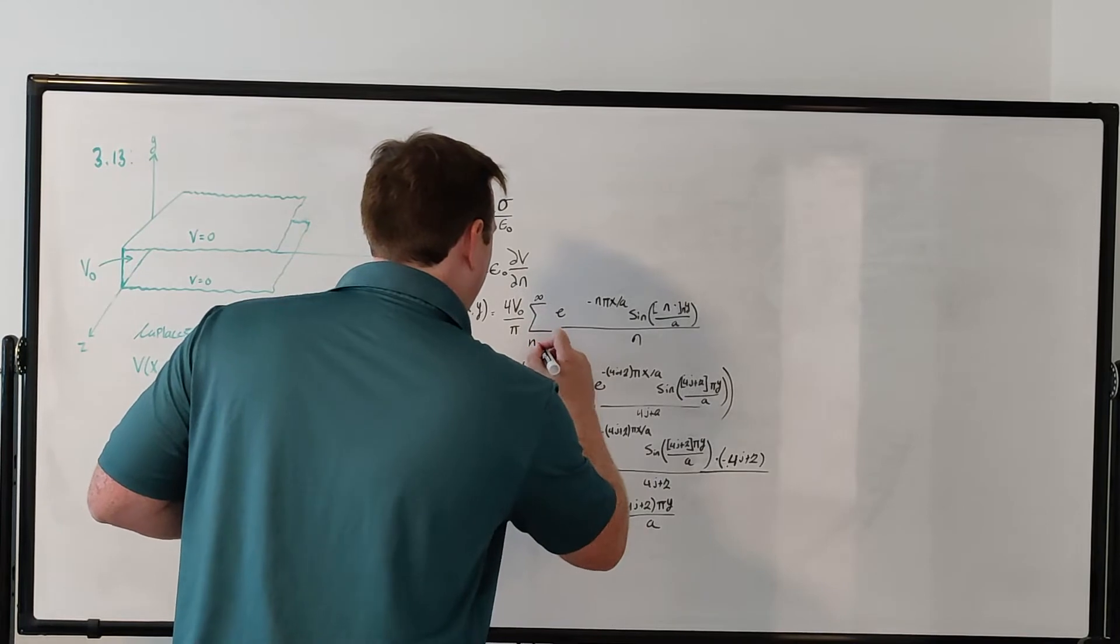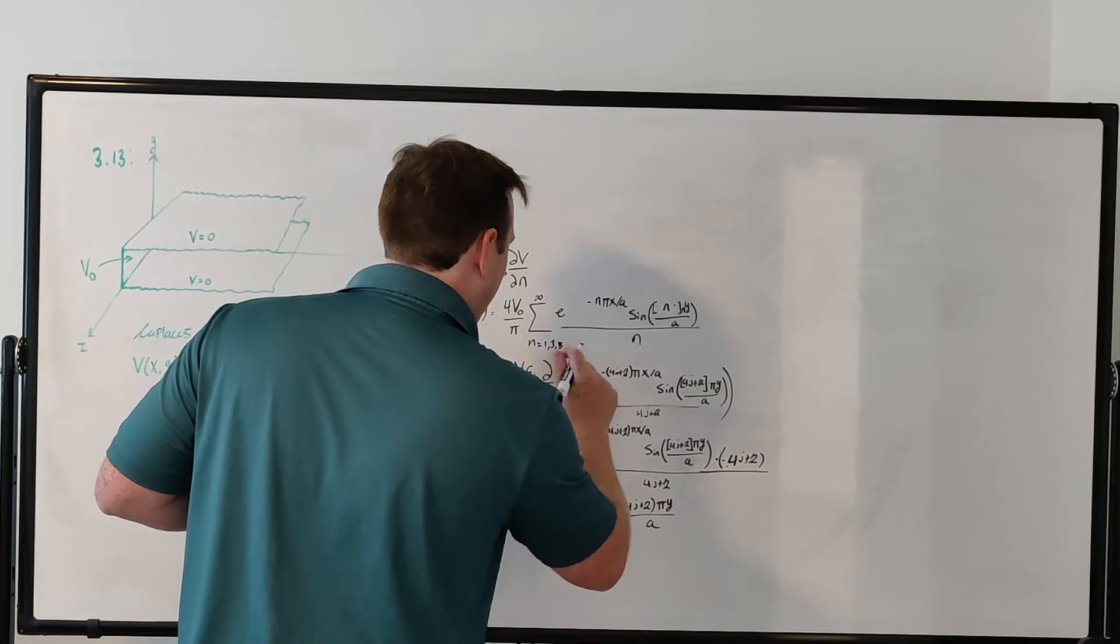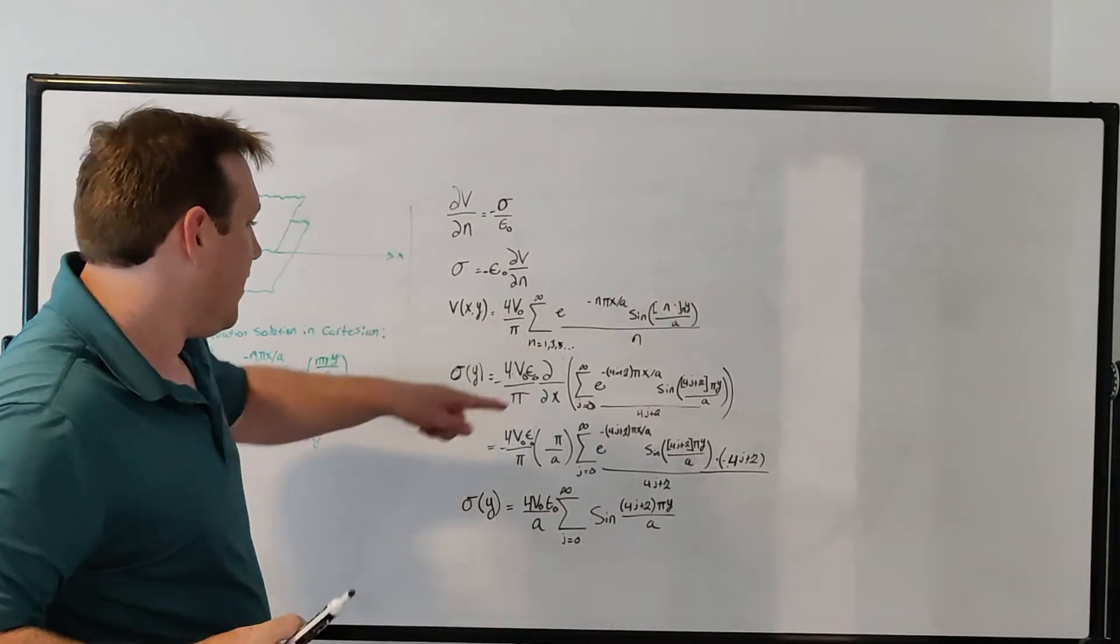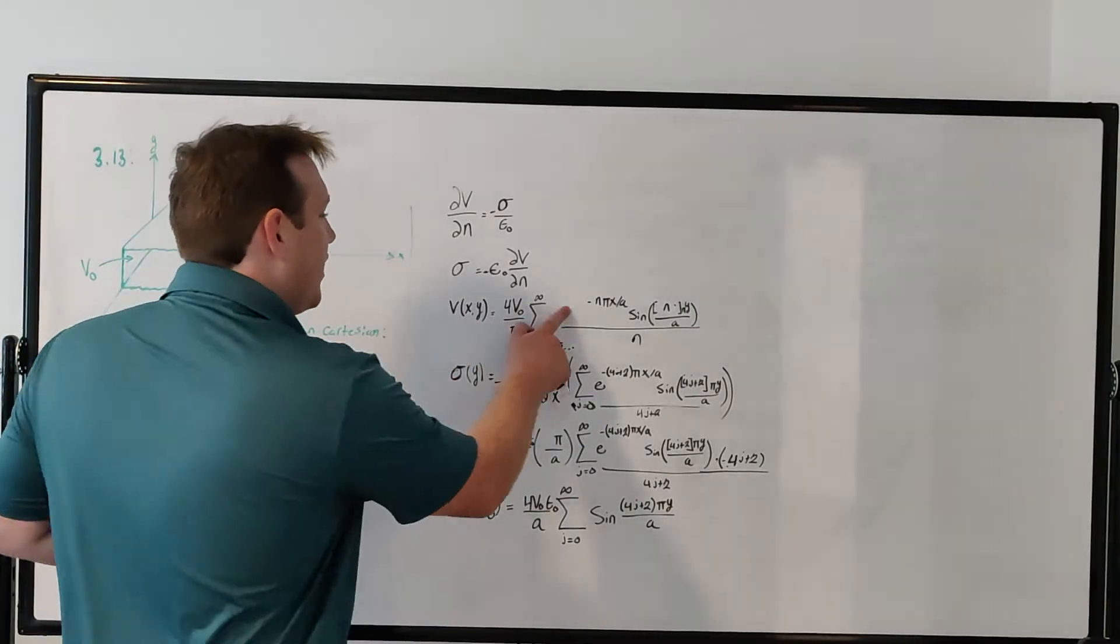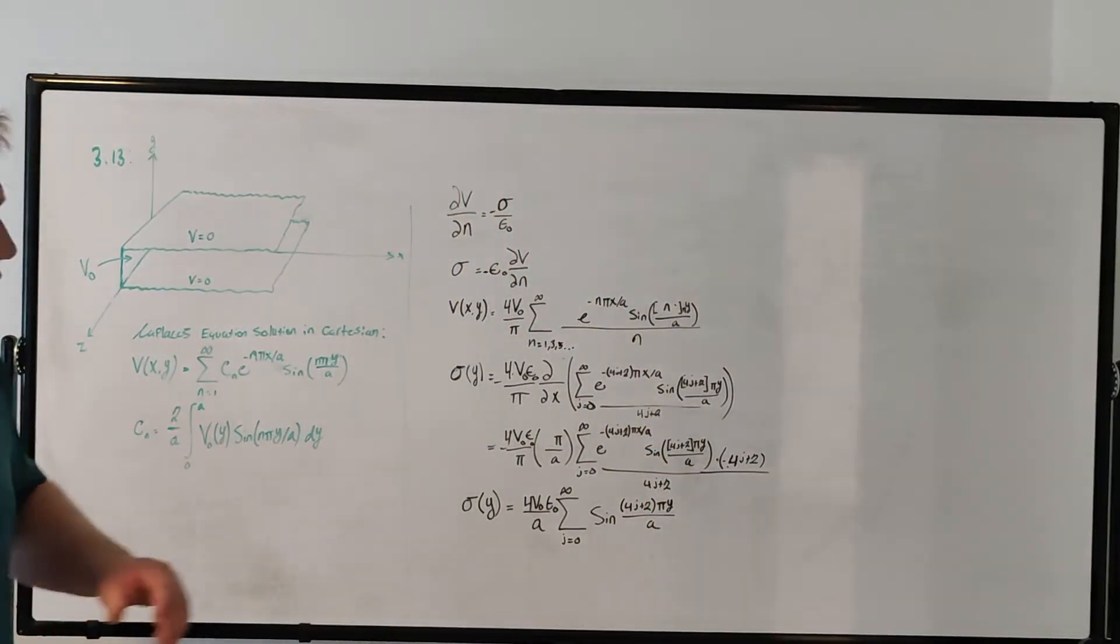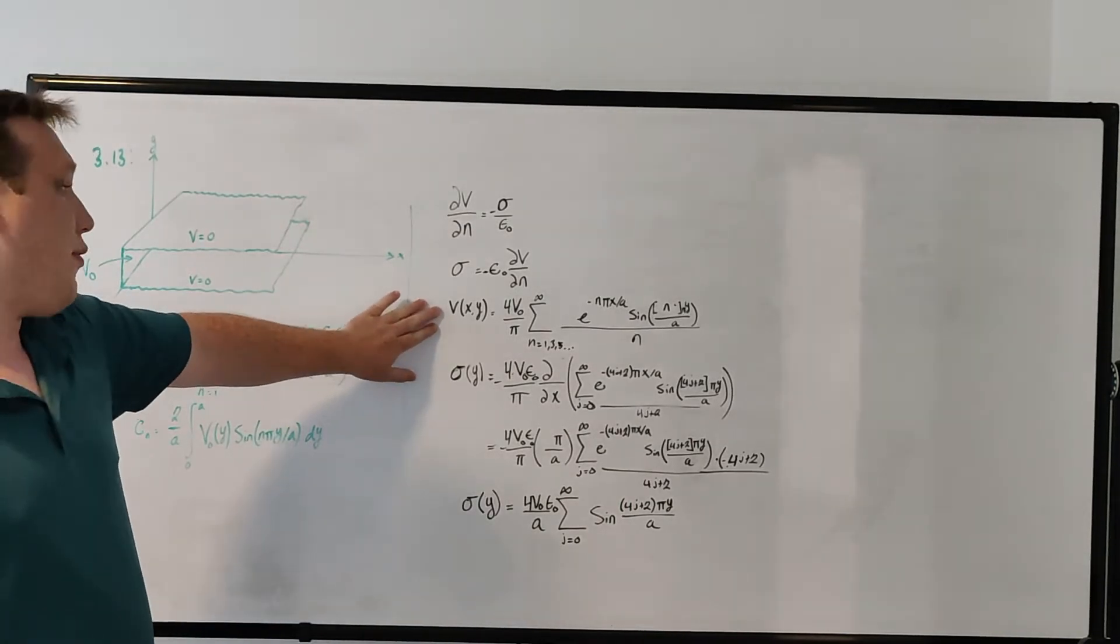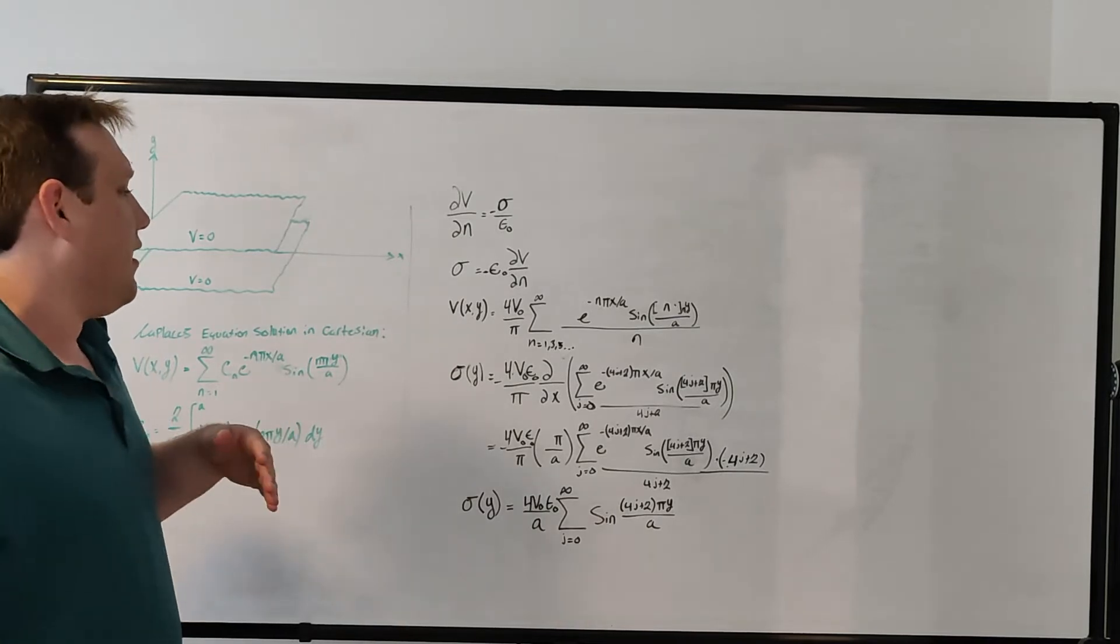The solution is we're just summing over the odd numbers here, where n is equal to 1, 3, 5, etc. So the solution is 4 V naught over pi, and the summation over n equal to the odd numbers to infinity, and we have the exponential function e to the minus n pi x over a times sine of n pi y divided by a, and then the whole expression divided by n. That is from example 3.3, straight out of the book.